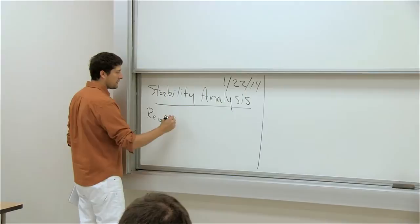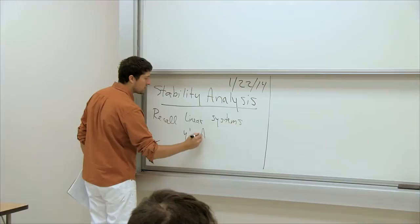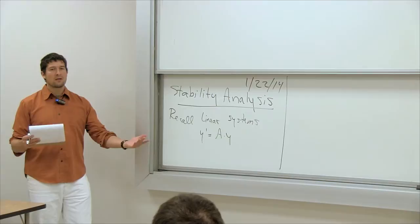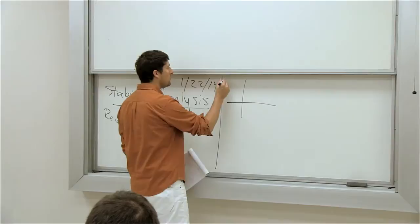Recall linear systems. If a system looks like y prime equals a matrix times y, what was the most important thing you learned? How can you figure out the stability of this system — whether the solutions blow up to infinity or whether they converge to the origin? You look at the eigenvalues.